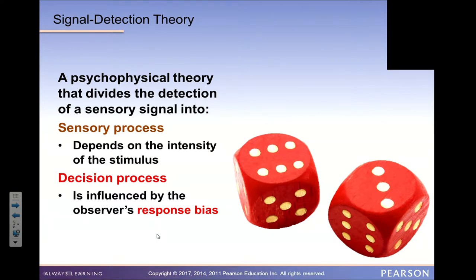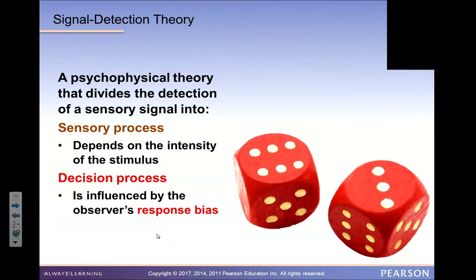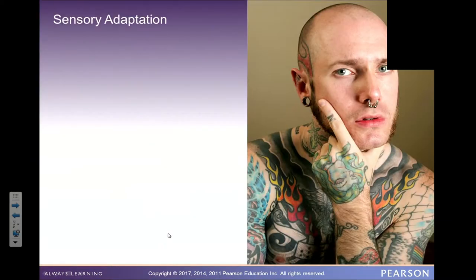One reason a person may sense and perceive versus another may not could be preoccupation — something else is on your mind. In some cases that's helpful; people with attention deficit disorder can't focus enough to ignore distractions. But if you are fortunate enough to use concentration — tunnel vision, if you will — that's a good thing. We don't get bombarded with everything going on in our world at any given moment.